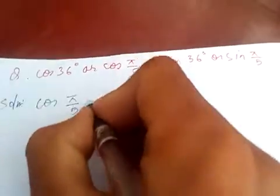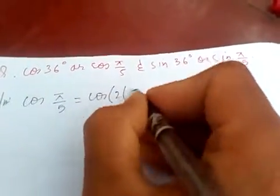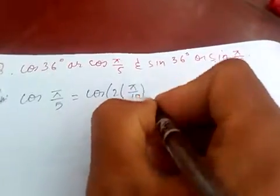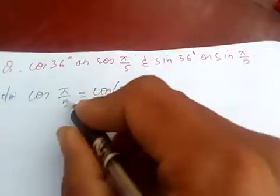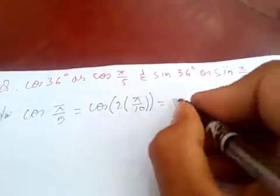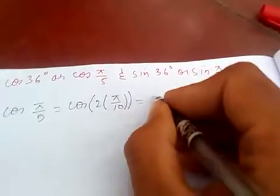So let's find first for cos. cos π/5 is same as cos 2(π/10) because these two can get canceled, 2 and 10 cancel, so you'll get this again. And we know cos 2x is just